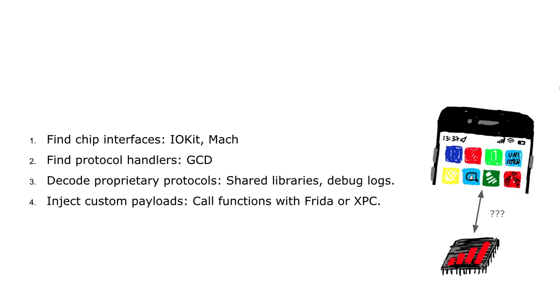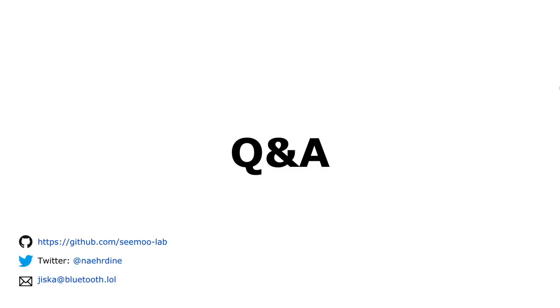Let me conclude this talk. In this talk I have shown that you can find chip interfaces using IOKit and the underlying Mach messages. You can identify protocol handlers quite fast using GCD. Proprietary protocol details are often contained in debug logs — you just need to read them, or you can reverse engineer shared libraries with symbols. If you want to inject custom payloads, you can also call functions using Frida, and often interesting functions are also callable via XPC. If you have further questions, you can always drop me a DM or write me an email.